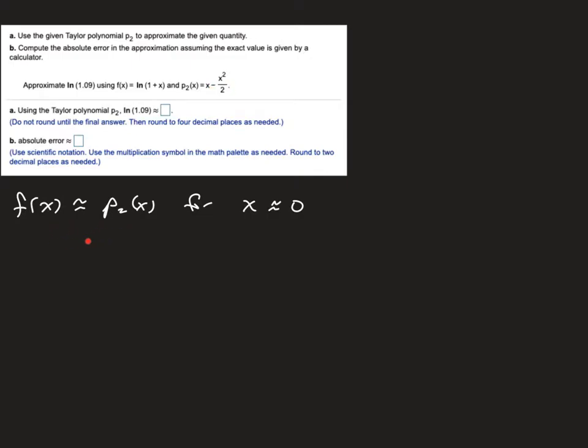Notice that f of x is the log of 1 plus x. So f of 0.09, that's equal to the log of 1.09. So if I'm trying to approximate log of 1.09, that means I'm trying to evaluate f of 0.09.